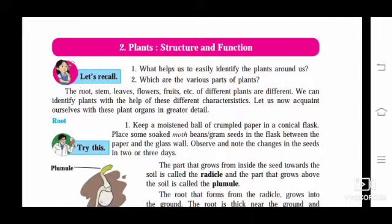The root, stem, leaves, flowers, fruits of different plants are different. We can identify plants with the help of these different characteristics. Let us now acquaint ourselves with these plant organs in greater detail.